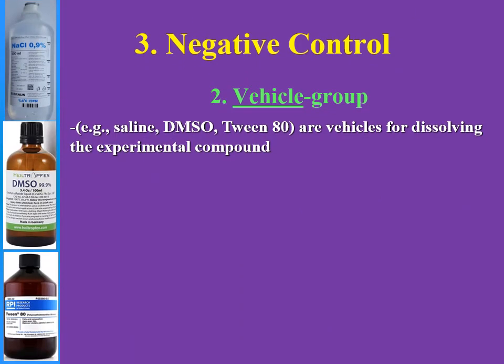The second negative control is the vehicle group. What is vehicle? Saline, DMSO, and Tween 80, and so on, are vehicles for dissolving the powder of experimental compounds or substances.